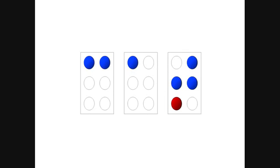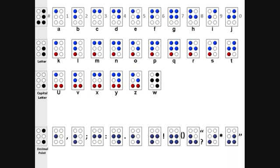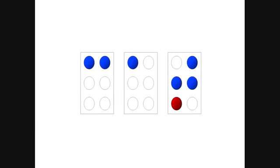So the first two cells we know are from letters A through J, because only the top four dots are raised. The third cell is from the second row of letters K through T, because dot three is also raised. So let's take a sneak peek back to all of our cells again. And as you may have guessed, these are the cells that represent the word cat.